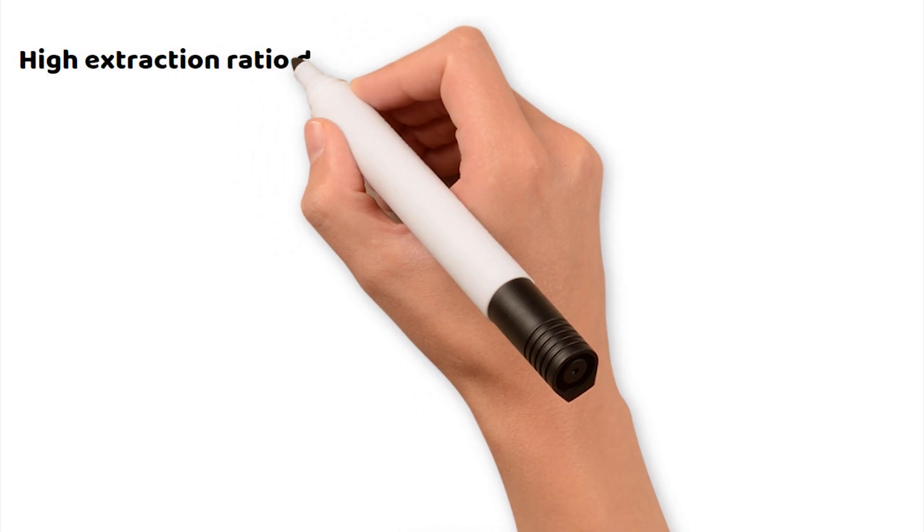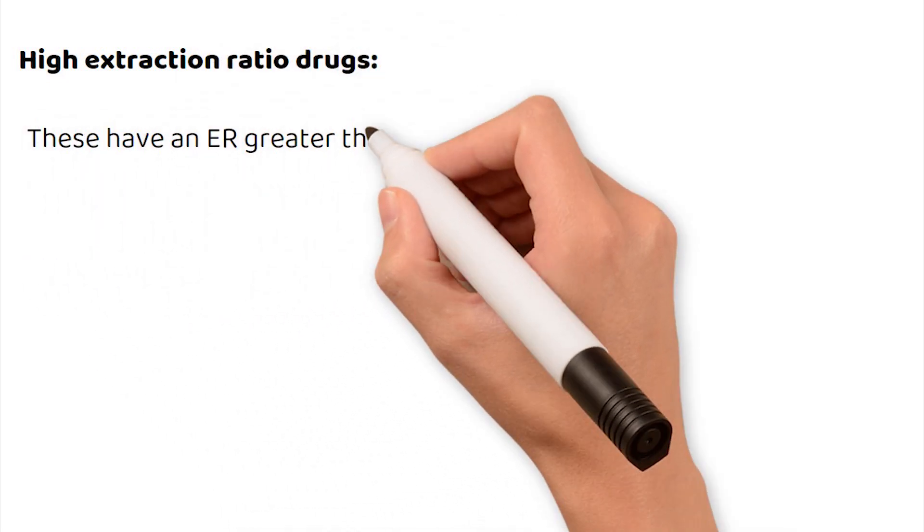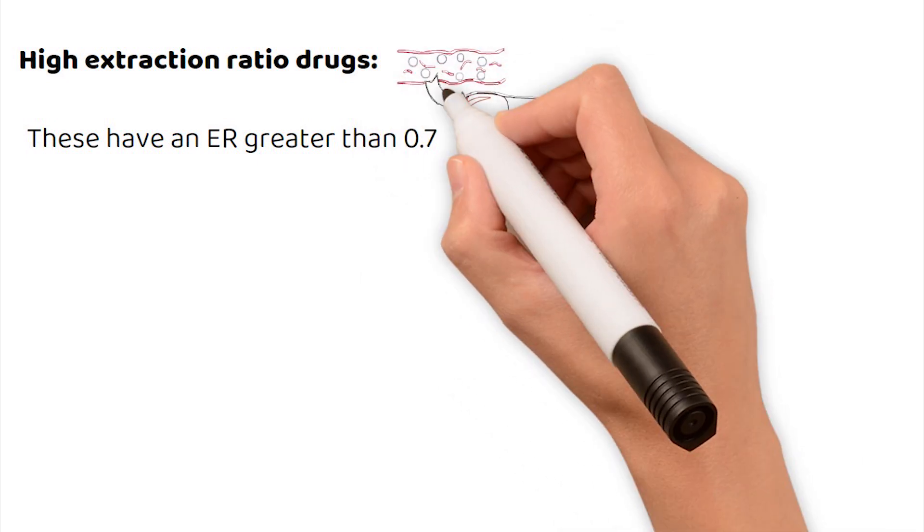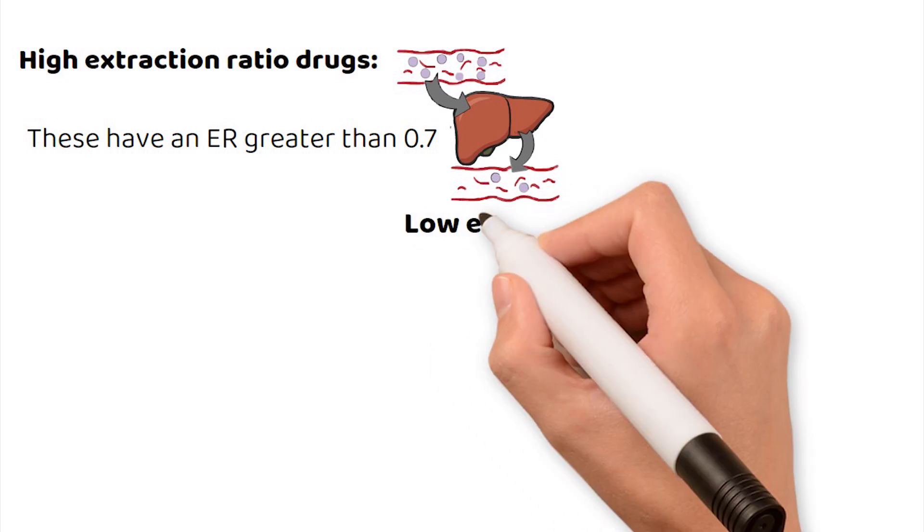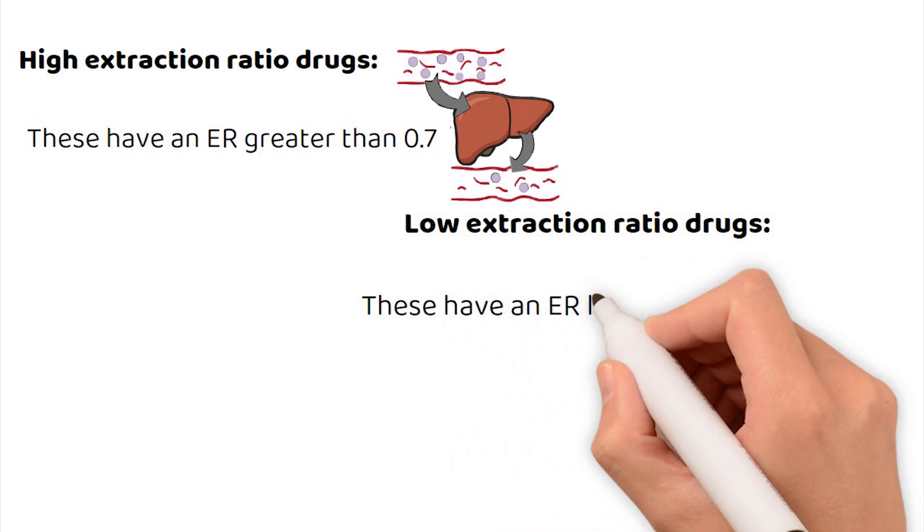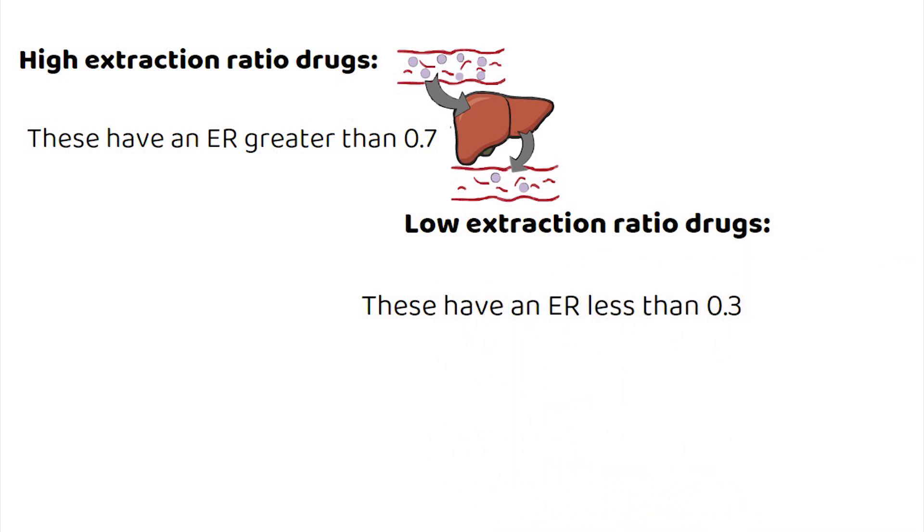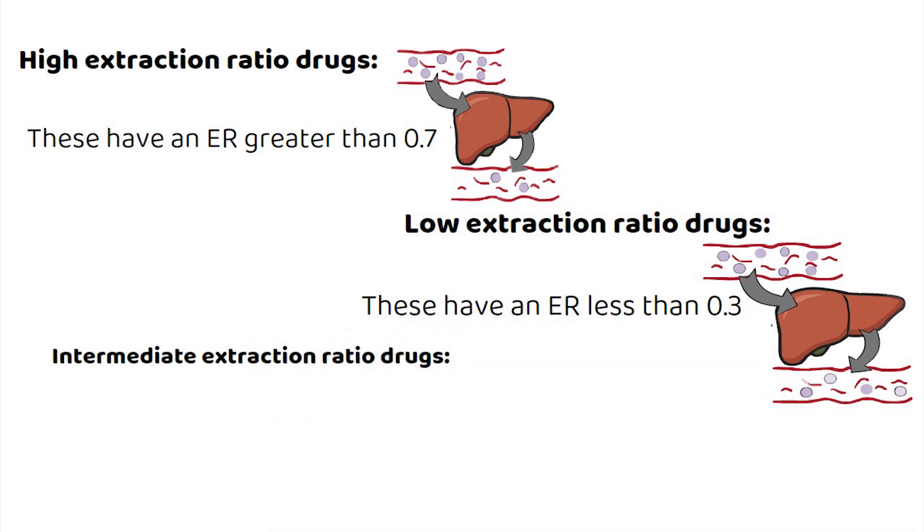High extraction ratio drugs have an extraction ratio greater than 0.7, meaning the liver removes most of the drug very efficiently during the first pass. Low extraction ratio drugs have an extraction ratio less than 0.3, meaning only a small fraction of the drug is cleared by the liver on each pass. Intermediate or moderate extraction ratio drugs fall between 0.3 and 0.7, indicating a partial removal by the liver.